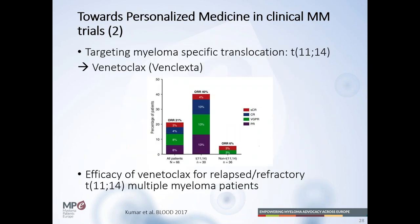Another utility of plasma cell characteristics is the translocation 11-14. While it does not confer a poor prognosis, venetoclax — an agent that attacks patients with a high BCL2/MCL1 ratio — shows a good response particularly in patients with translocation 11-14, which drives high BCL2 expression. This is a very nice way to use plasma cell data to give targeted therapy, achieving better responses in patients with translocation 11-14 compared to those without.